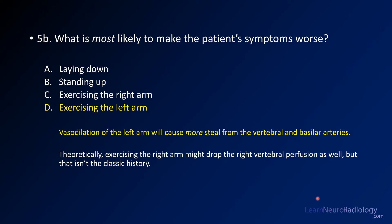The answer to the last question — what is most likely to make the patient's symptoms worse — is exercising the left arm. When you have vasodilation of the left arm, you get more steal from the vertebral artery, more retrograde flow, and you steal blood from the brain to power the left arm. Theoretically, exercising the right arm might drop right vertebral perfusion, but that isn't really the classic history.